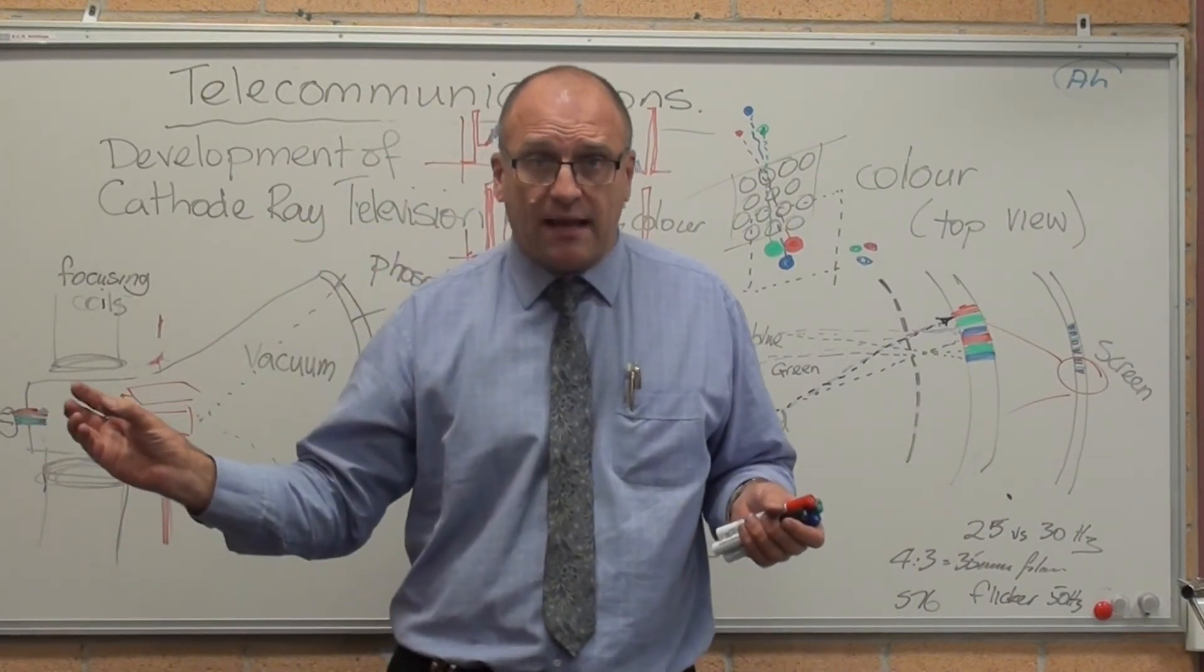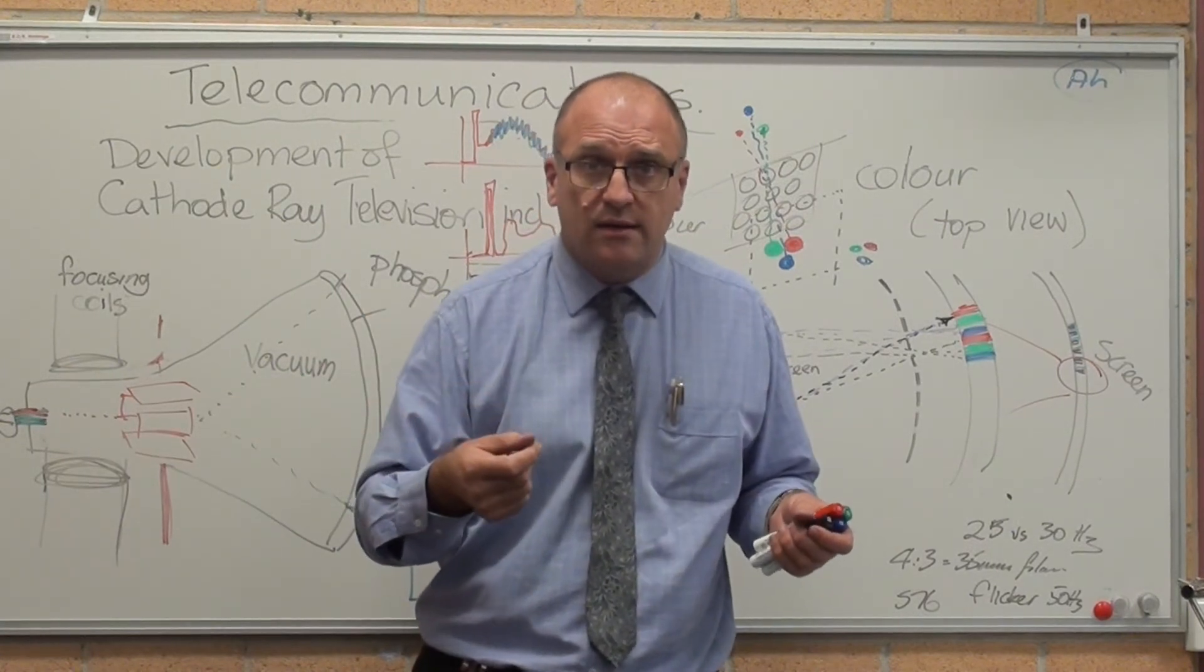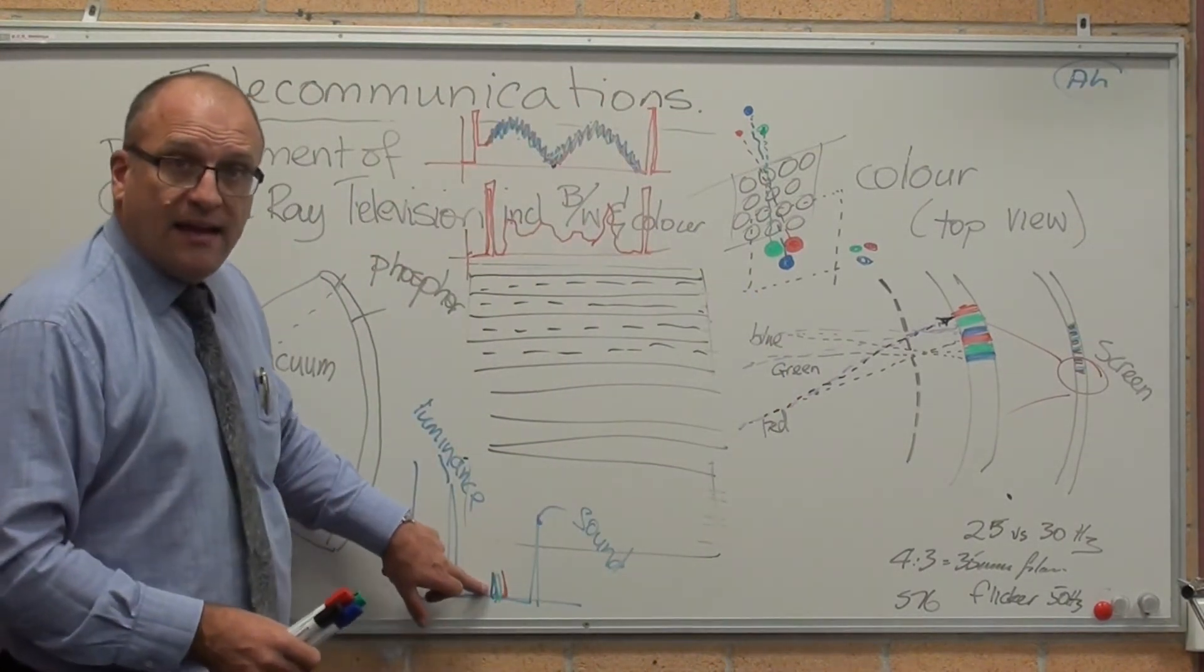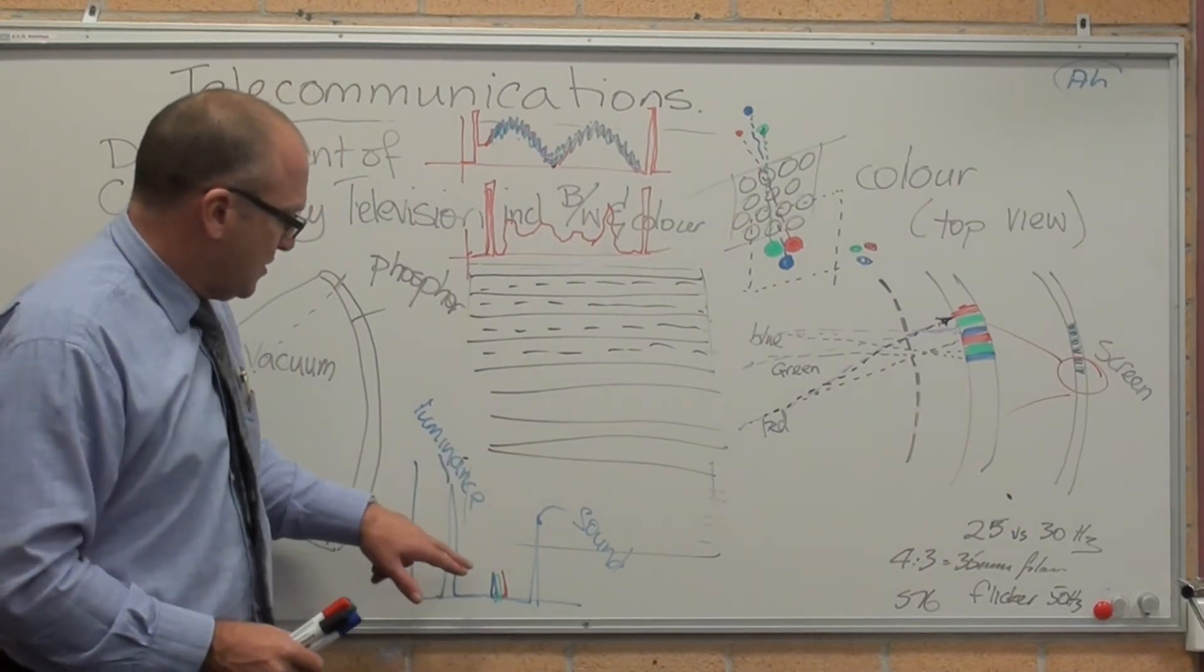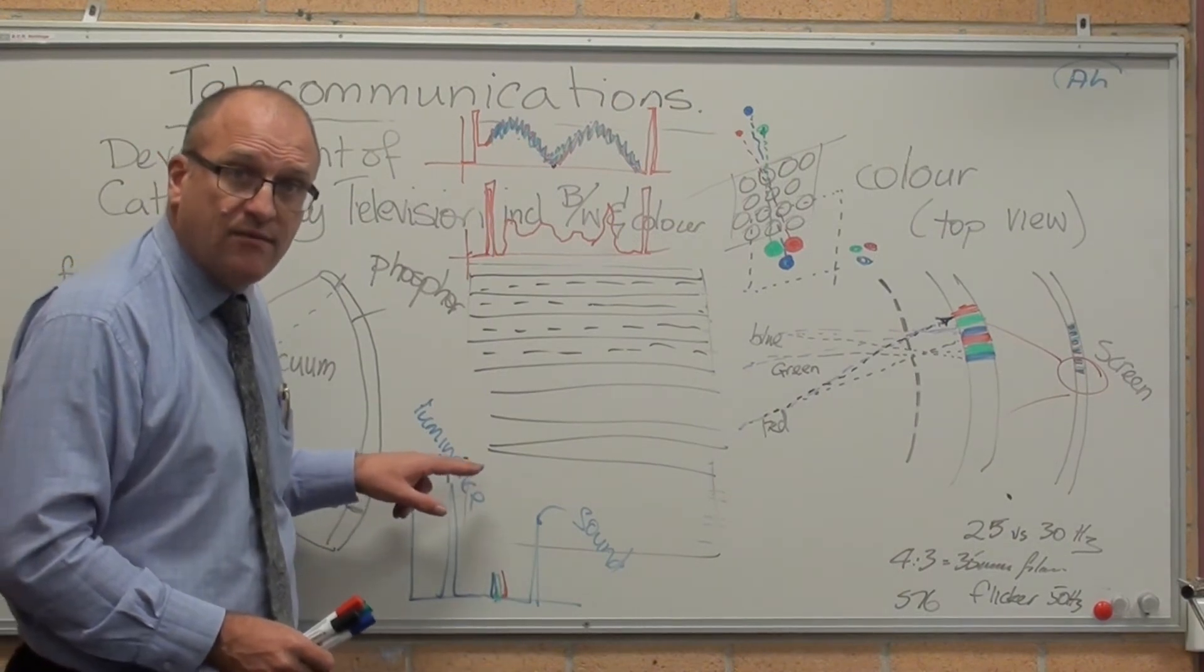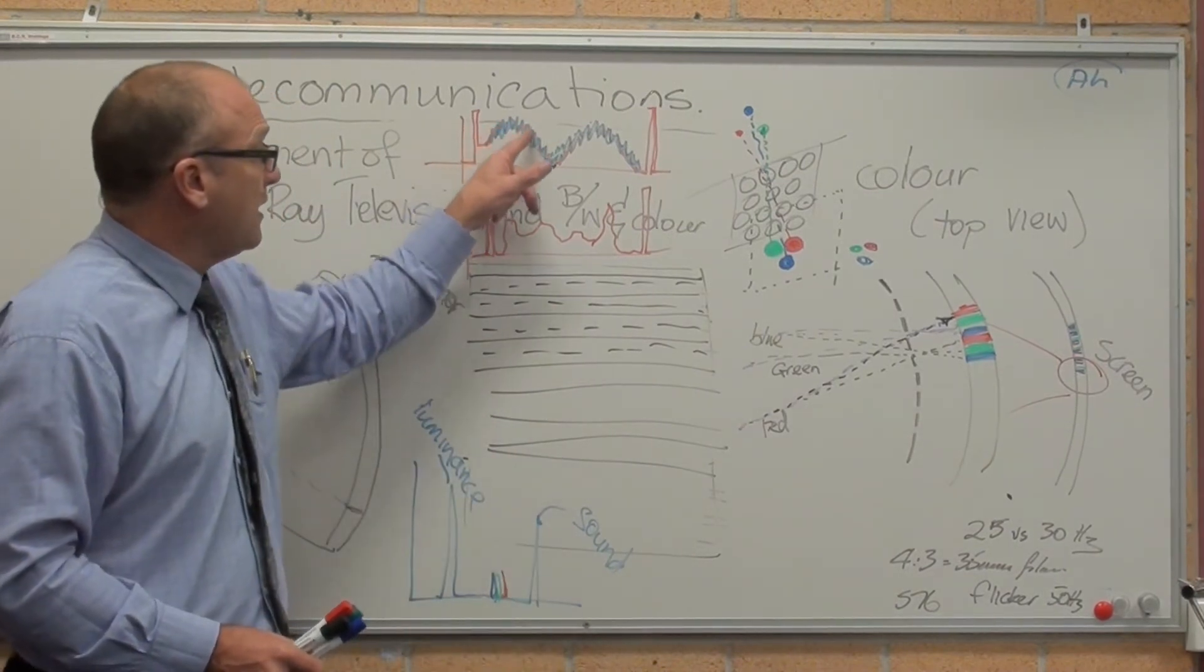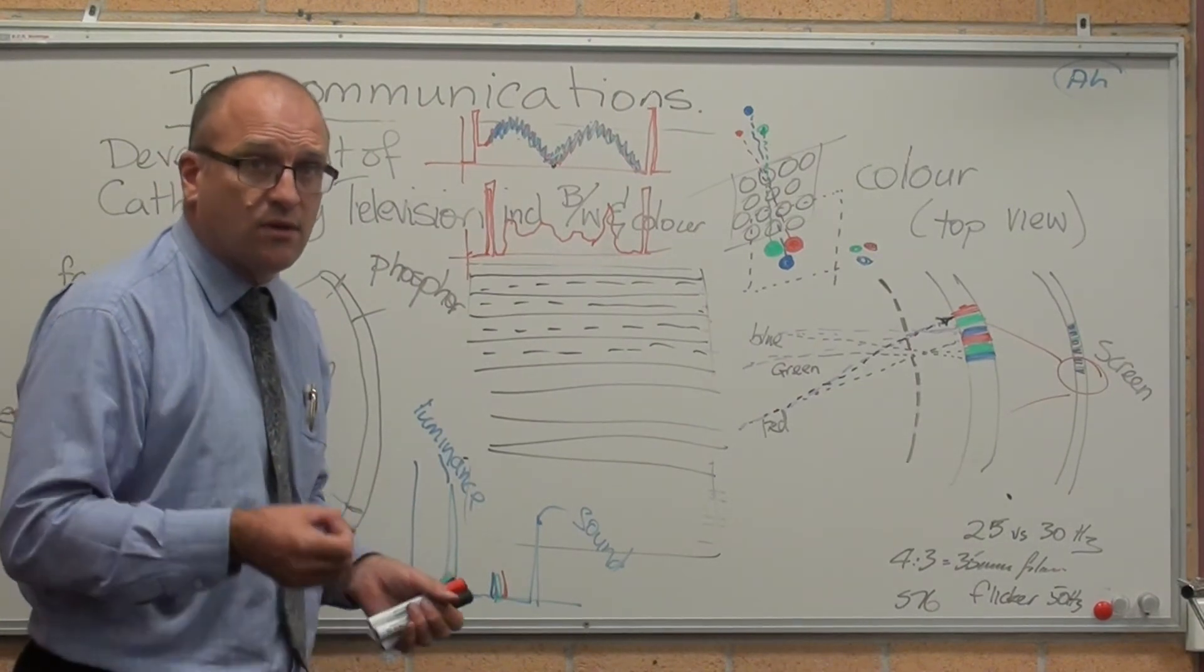It was backwards compatible with black and white, because a lot of people had televisions that were black and white and didn't want to go out and buy a colour television. So it had to be what they called backwards compatible. You still transmitted luminance and sound. Black and white televisions in the colour TV era still worked. They only picked up luminance and sound, and all the colour additions just became noise on the picture signal that didn't matter.